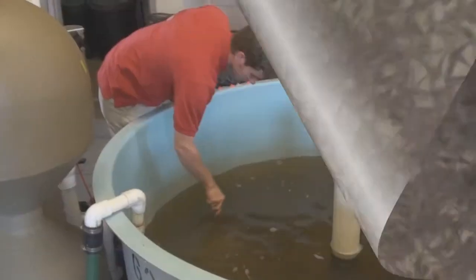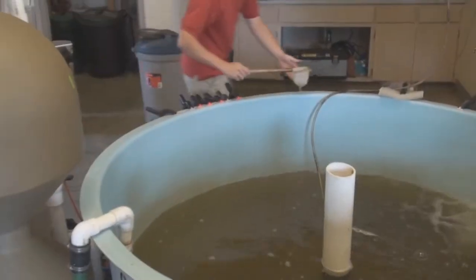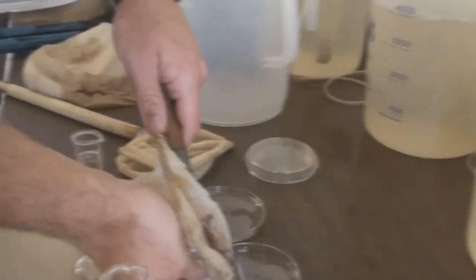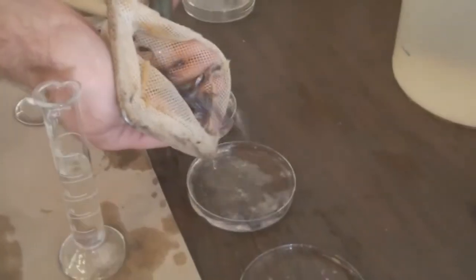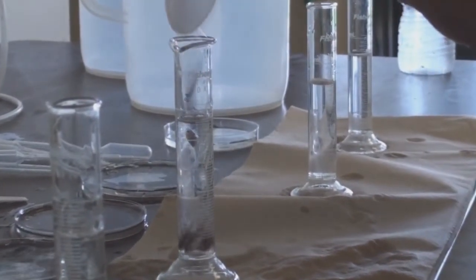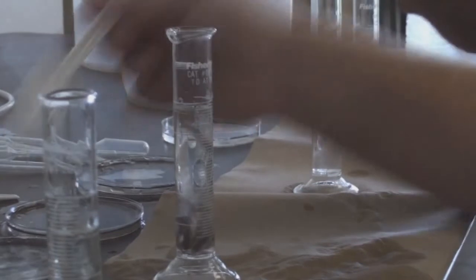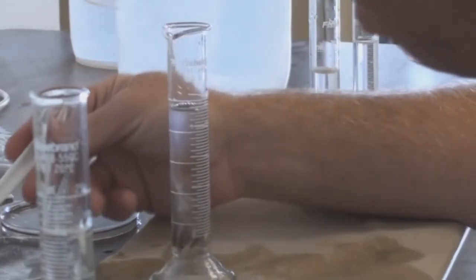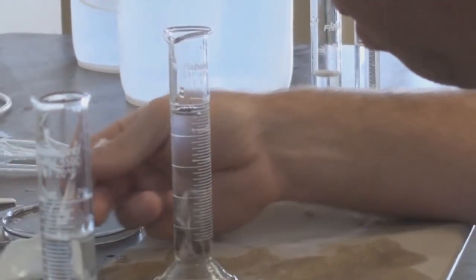Using a fry net, we carefully take a small sample of fish from the larger tank. Our fish are counted into a small graduated cylinder with water. By using a small plastic spoon, the hatchery manager can quickly count a known number of fish while minimizing damage to the fish.